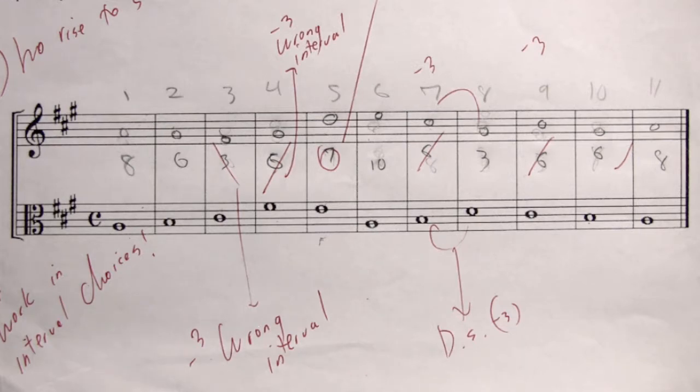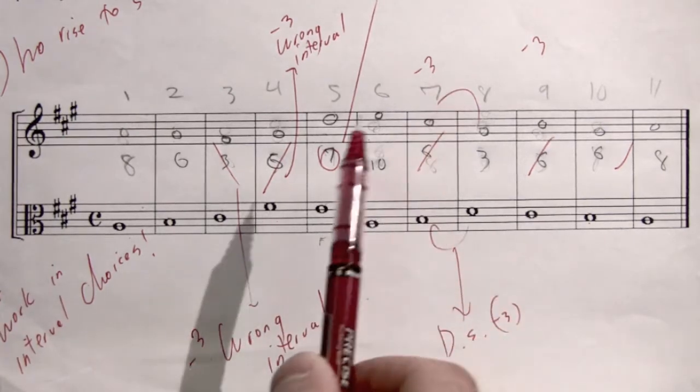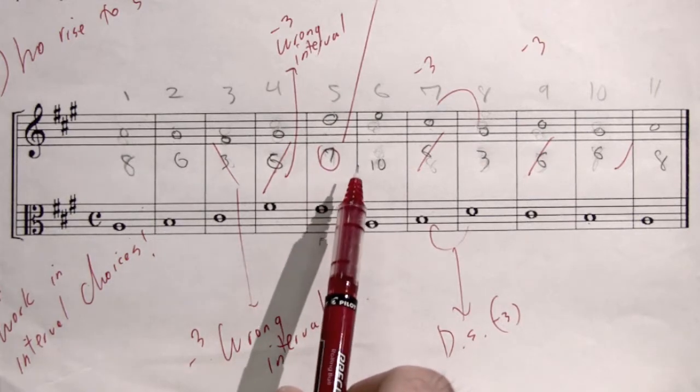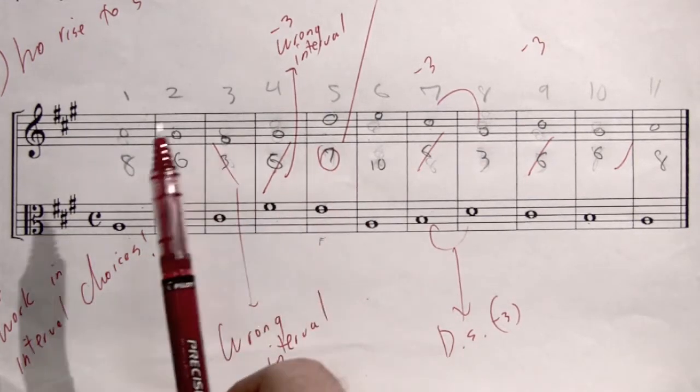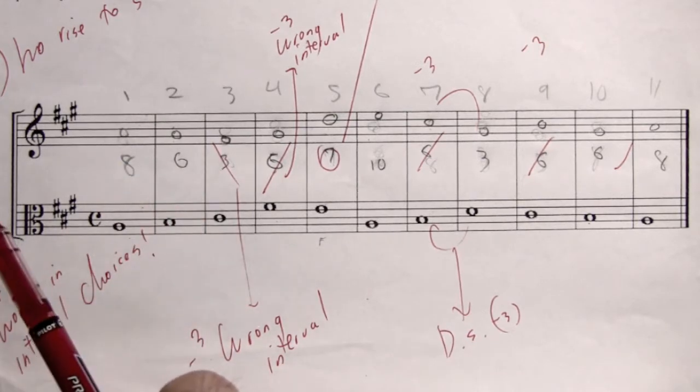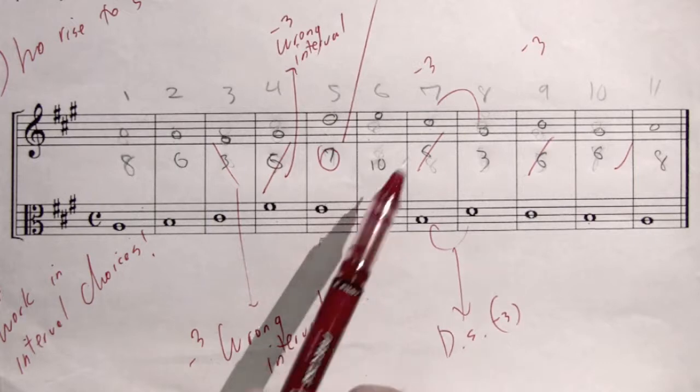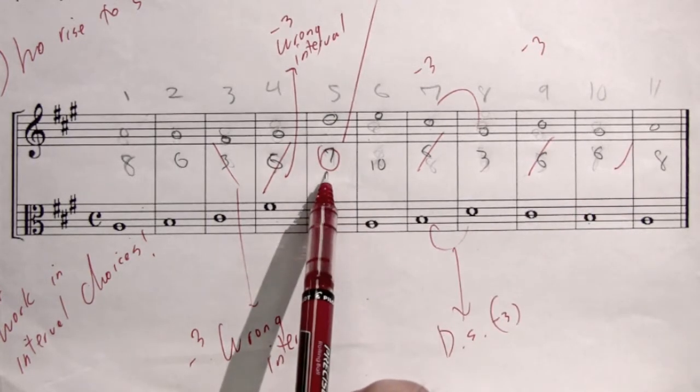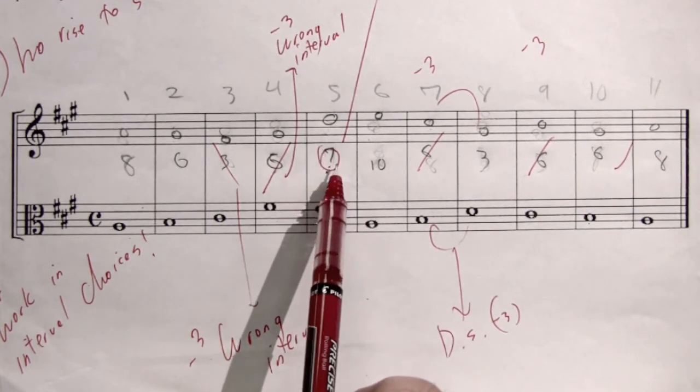So we're in the key of A, and there is an issue that seems to be going on with the student counting correctly and arriving at the intervals that they should be using. Again, in Species Counterpoint 1, you can only use a unison, a third, a fifth, a sixth, or an octave. The tenth is also an option. Notice how the seventh is not an option here, so that should have never been attempted.